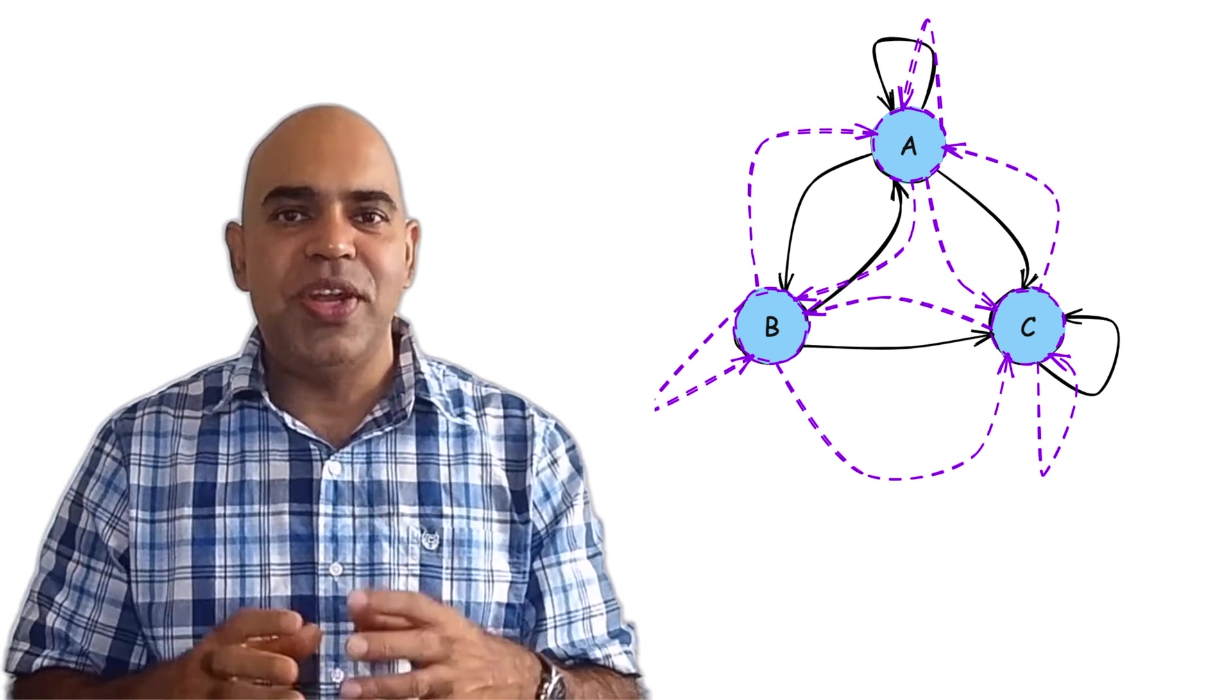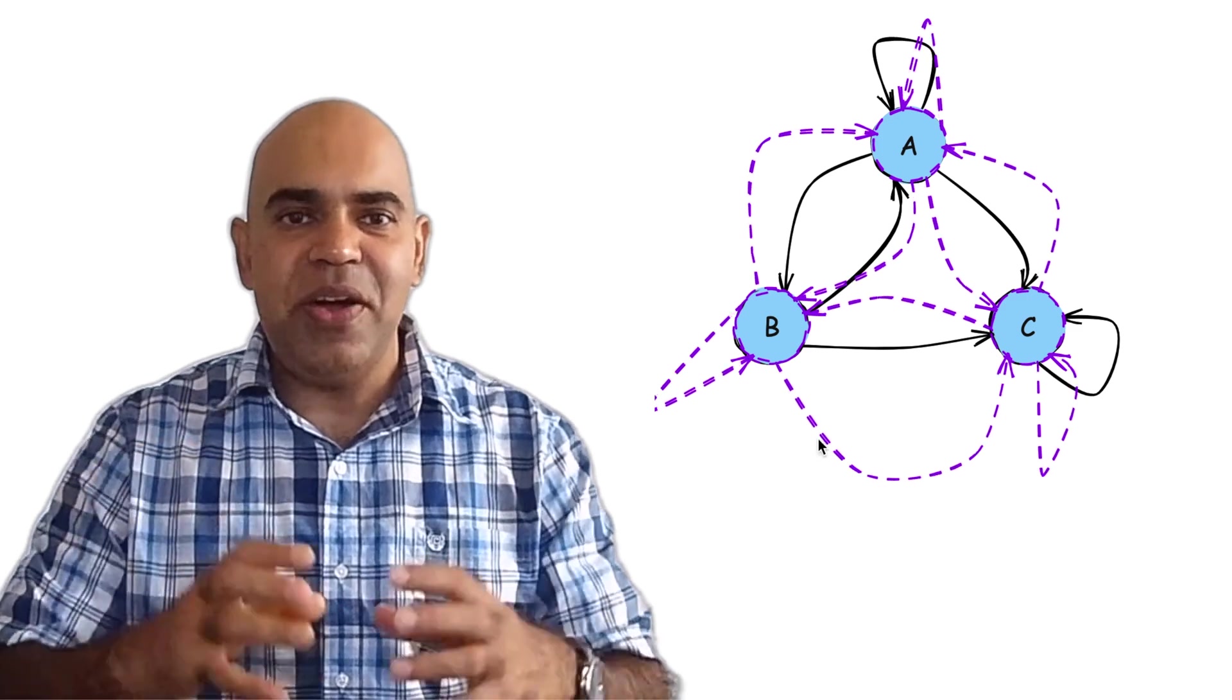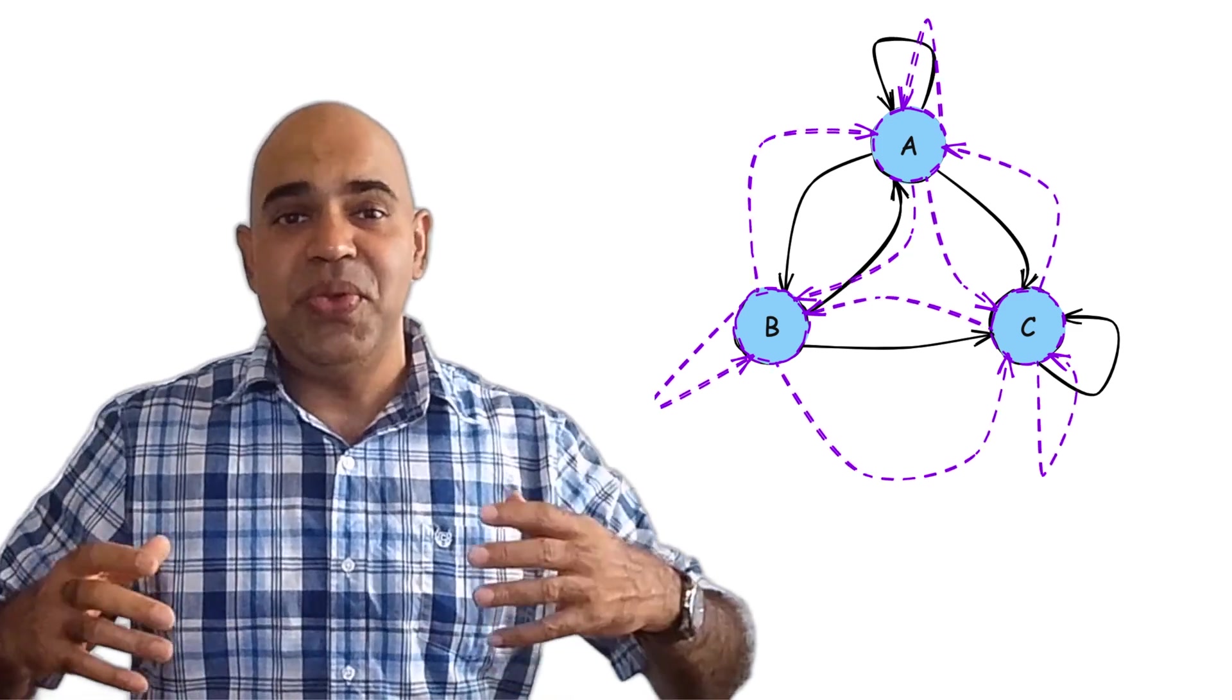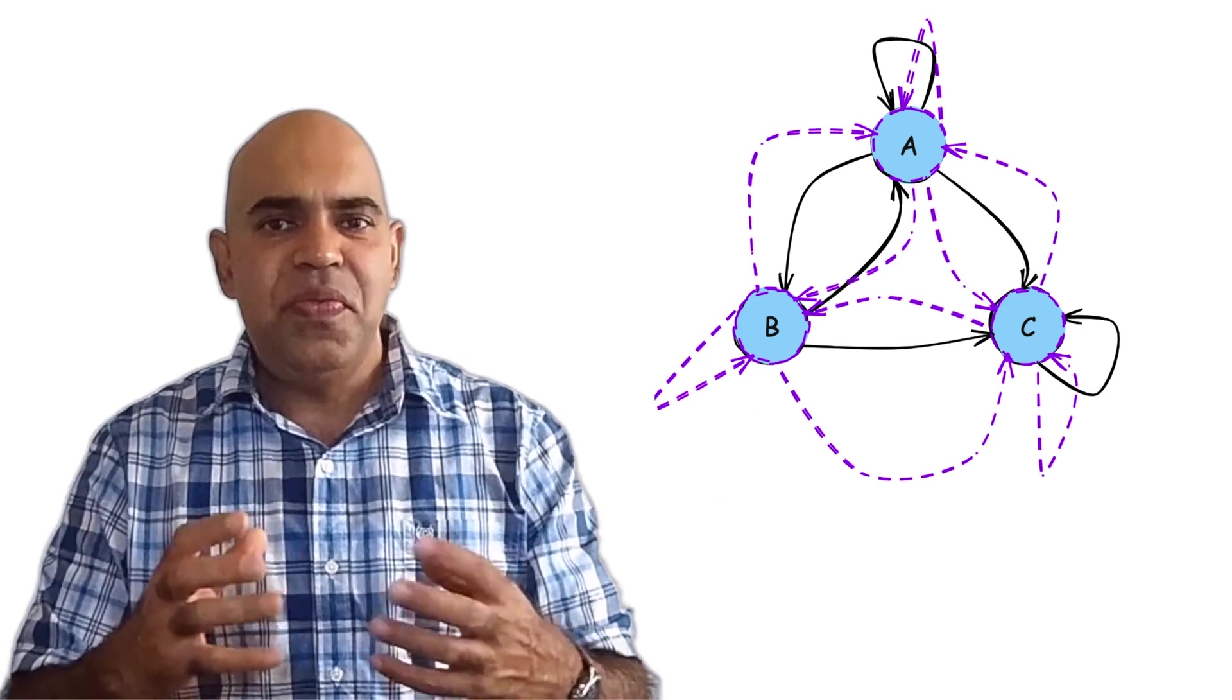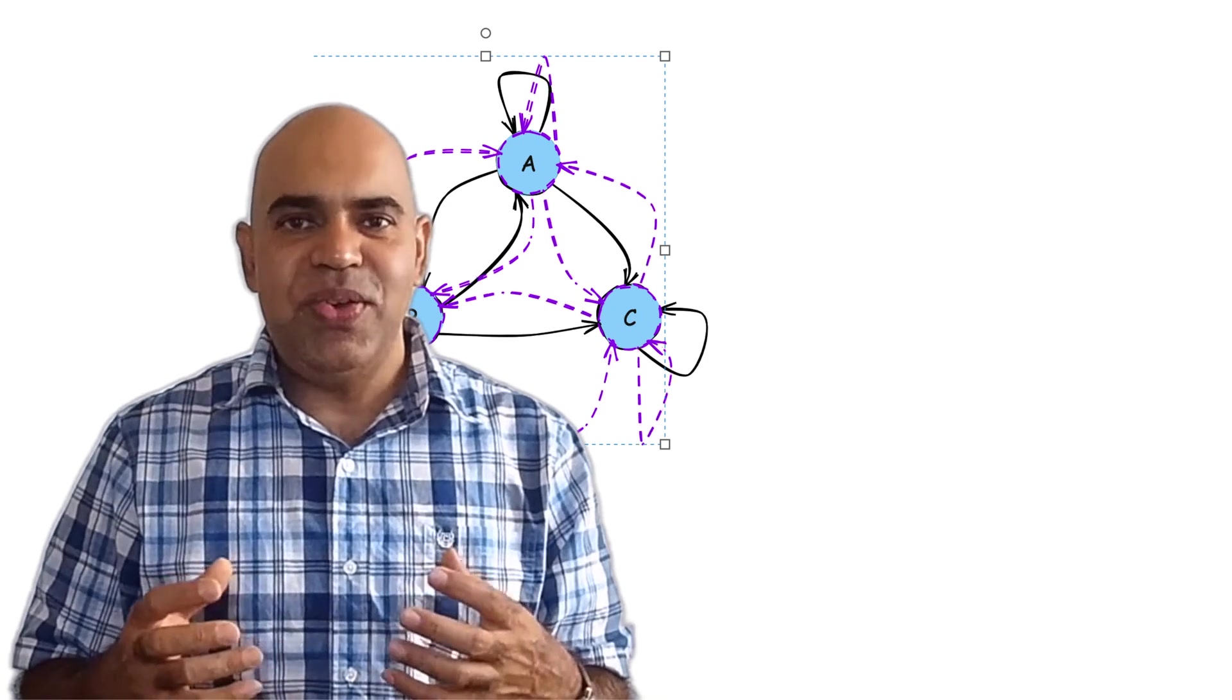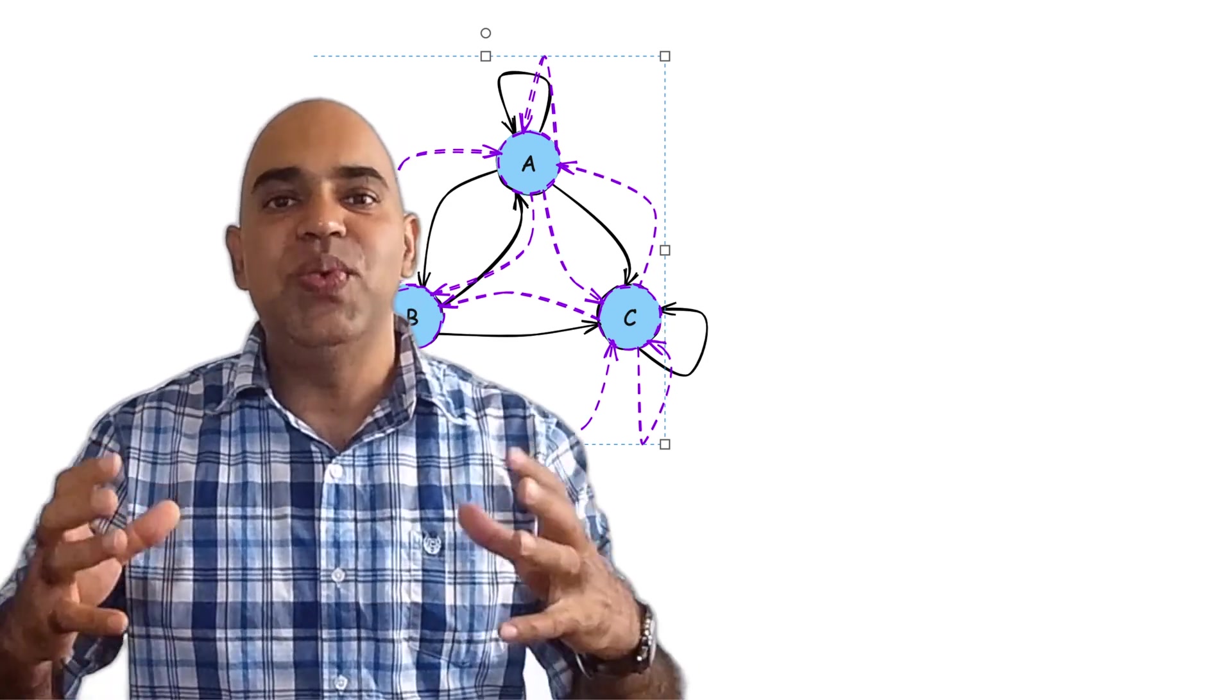That teleportation internet network has connections between each pair of websites. The random surfer can now decide to jump to any random website from a website. The surfer can even randomly jump back to the same website where it is, even if there is no actual self-loop.